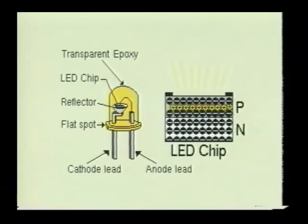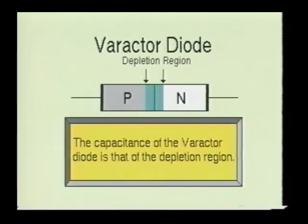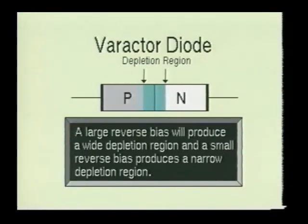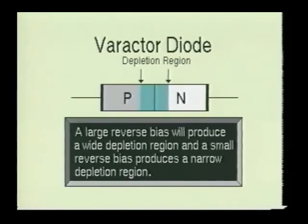Apart from this, the LED does have the advantage of long life and ruggedness. Here we see the varactor diode. The VVC diode is also referred to as a voltage variable capacitor, or VERICAP for short. Basically, the varactor diode is a reverse bias diode, and its capacitance is that of the PN junction depletion region. A large reverse bias produces a wide depletion region. This depletion region will act as a dielectric between two conducting plates — in this case the two semiconductor materials. Because of this characteristic, the varactor diode has the ability to act as a voltage variable capacitor. The primary application of the varactor diode is as a tuning device for oscillator circuits.